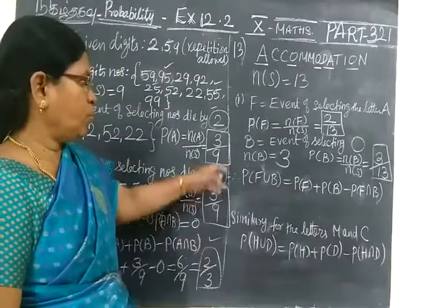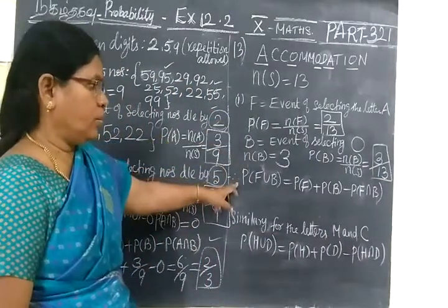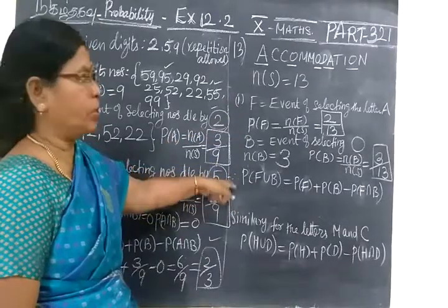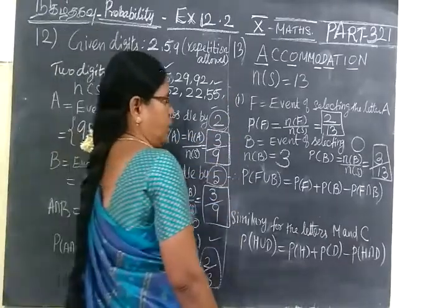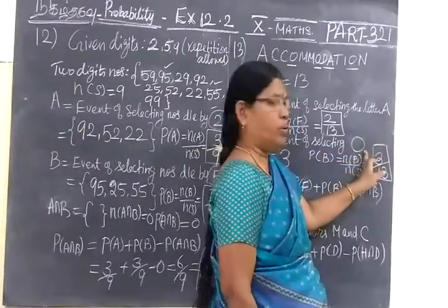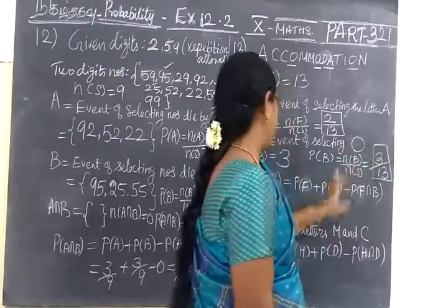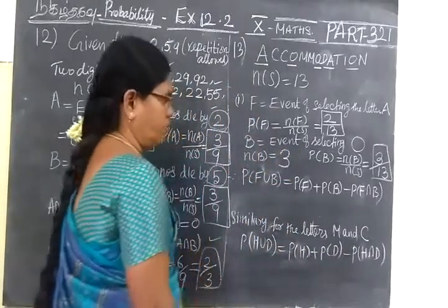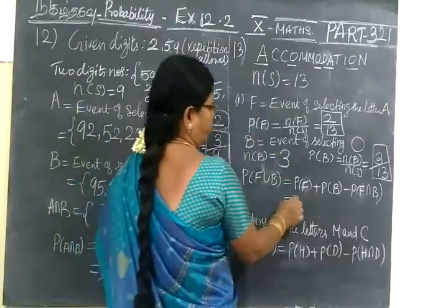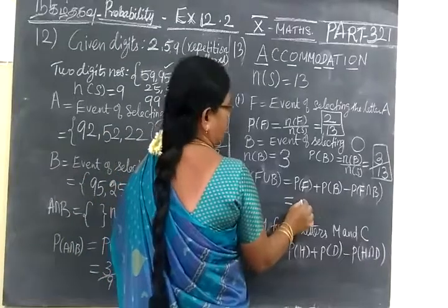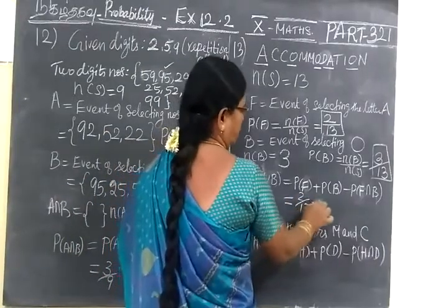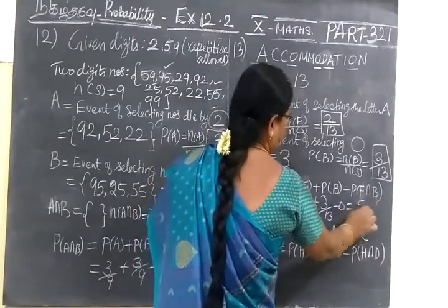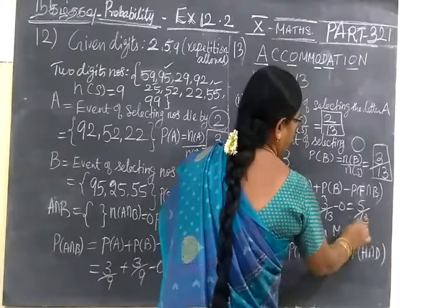Now common to both the events, no such letters we can find common. So that is null set because one letter should be A, another letter should be O, no common for this. That is understood obviously. So that is 0. So P(E∪O) equal to 2 by 13 plus 3 by 13 minus 0 equal to 5 by 13.